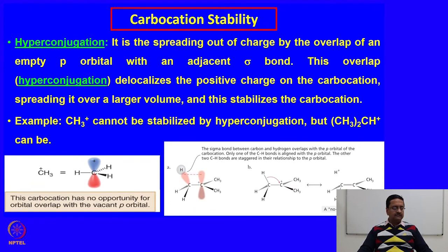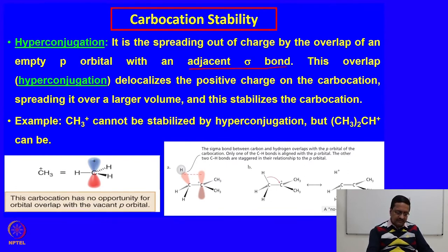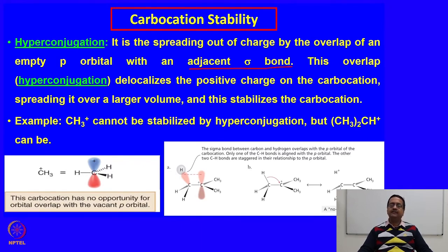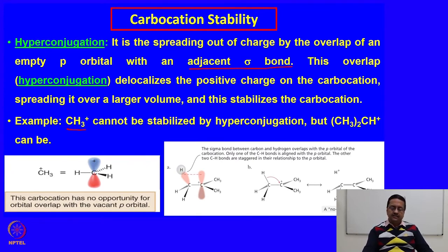The other effect is called hyperconjugation. It is the spreading out of the charge by an overlap of an empty p orbital with an adjacent sigma bond. This overlap delocalizes the positive charge on the carbocation, spreading it over a larger volume or area, and hence stabilizes the carbocation. For example, methyl carbocation cannot be stabilized by hyperconjugation but the isopropyl carbocation can be.